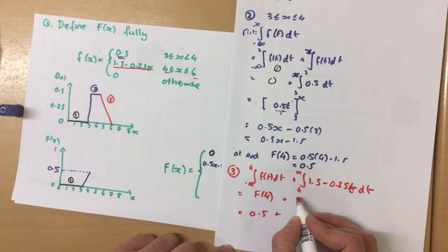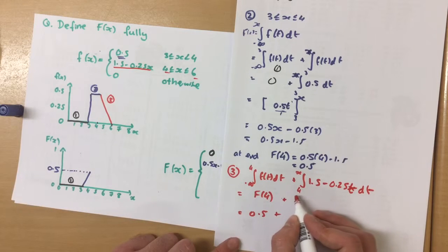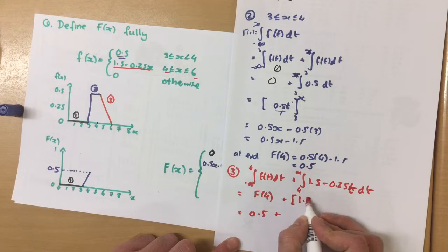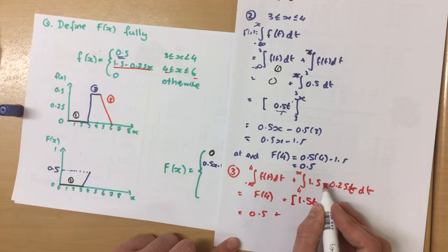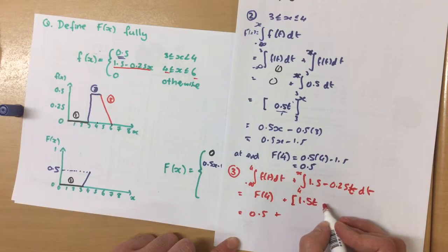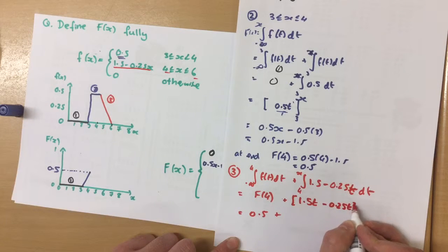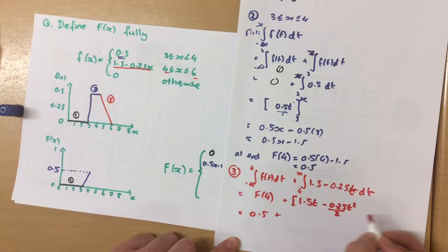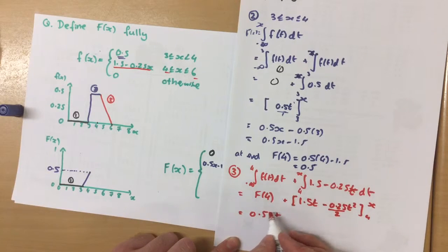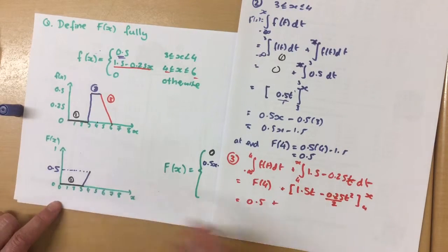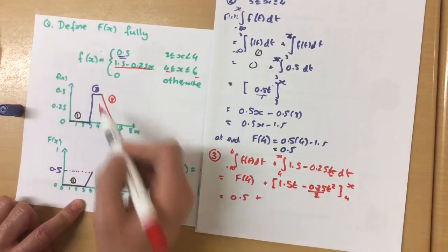Okay, so you want to integrate this function, which is 1.5t, increase to the power by 1 divided by the power, minus 0.25t squared over 2, between 4 and x. So onto our 0.5 at this point, you need to add on this section here.